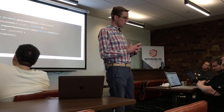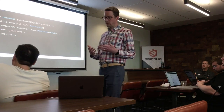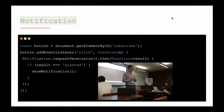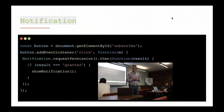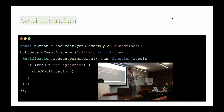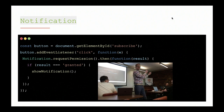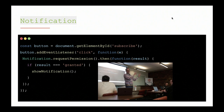Another thing you can do with the Service Worker API is notifications — native applications have this ability and you can disable them. In this example, I have a button with ID 'subscribe'. I add a click event listener and use the Notification API to request permission. The reason I trigger it on a button click rather than on page load is so the user actually chooses to subscribe. The API returns a promise that resolves with 'granted', 'failed', or an empty string.